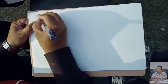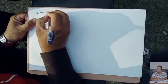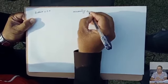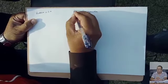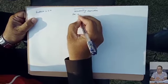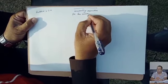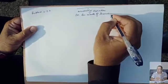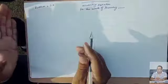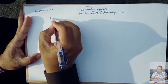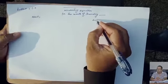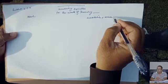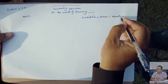The problem we are doing is 2.38, the accounting equation. The name of the company is called Accounting Equation. The left-hand side is known as the asset side, and the right-hand side is known as liabilities plus owner's equity.